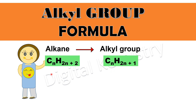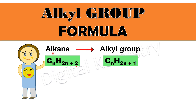Alkane aur alkyl group ke formulae mein sirf aur sirf difference yeh hai ki alkane ke formula mein hydrogen ka number 2n+2 hai, jabki alkyl group ke formula mein hydrogen ka number 2n+1 hai. Yani alkyl group mein one hydrogen less hai as compared to alkane.